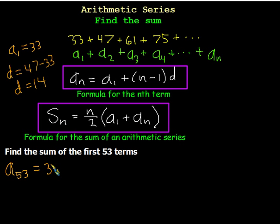So we'll take 33, which is a sub 1. We will add that to n minus 1, which is 53 minus 1. And then we'll multiply that times d, which is 14. This will get us the 53rd term and we can use that to find the sum up to the 53rd term. And the total here is 761.